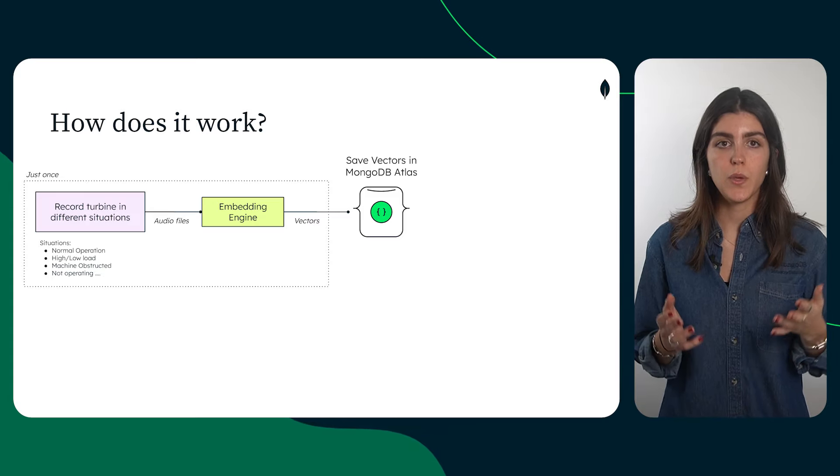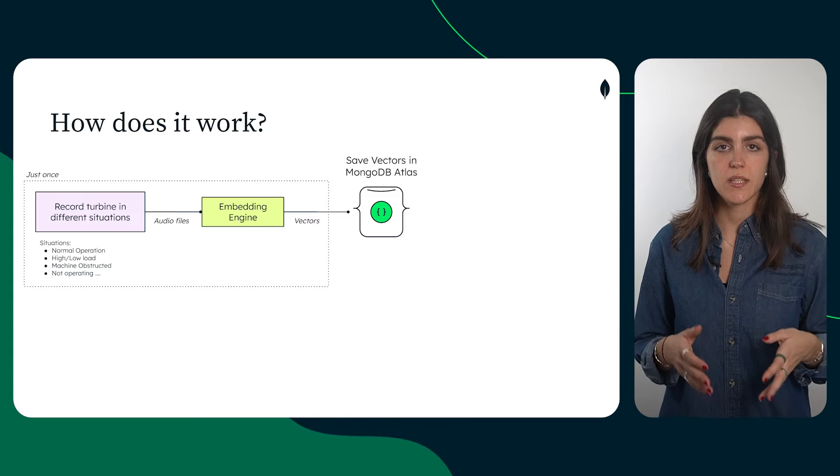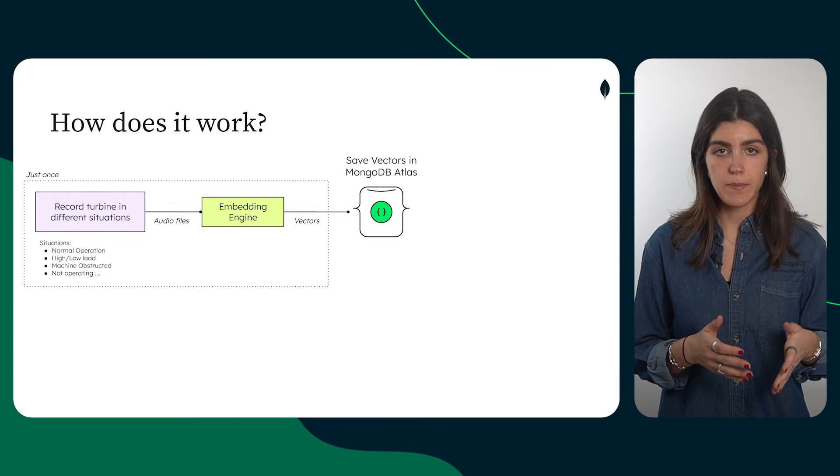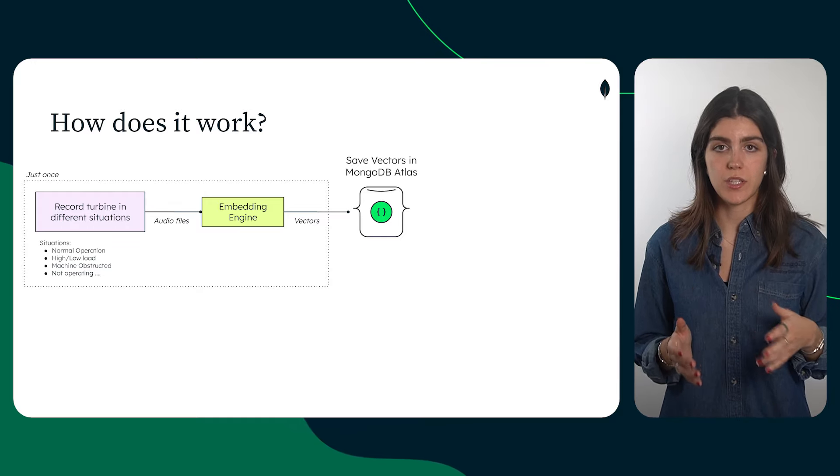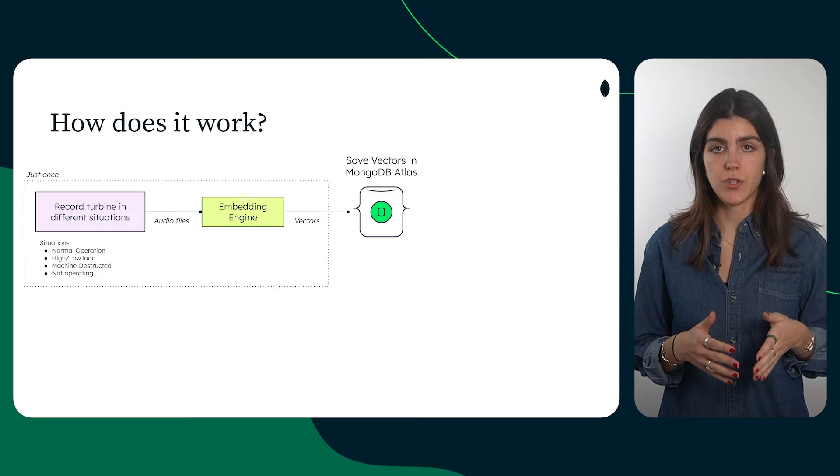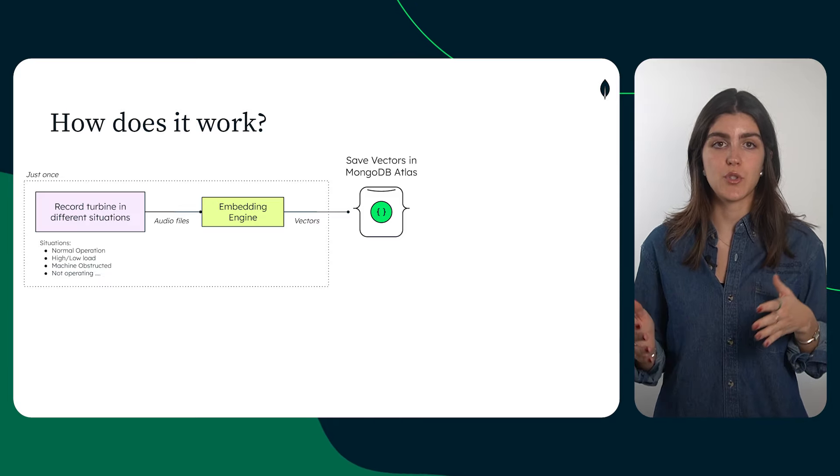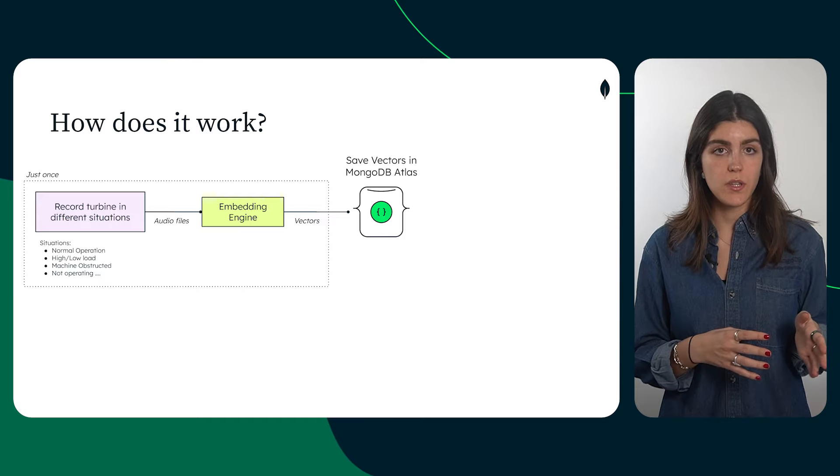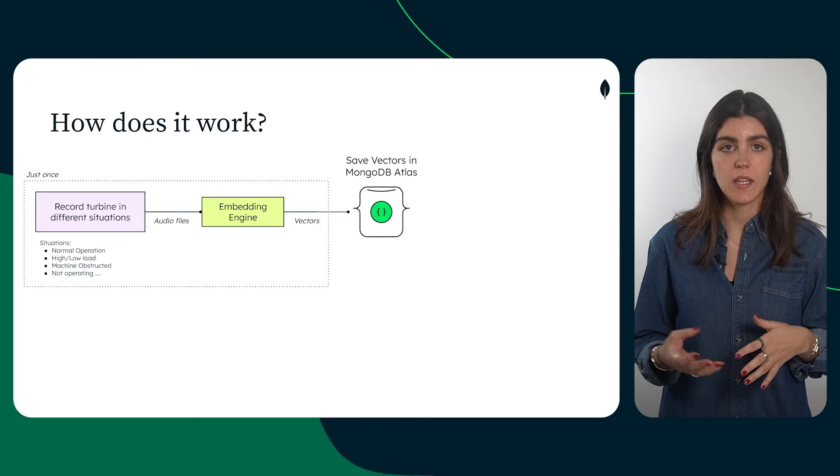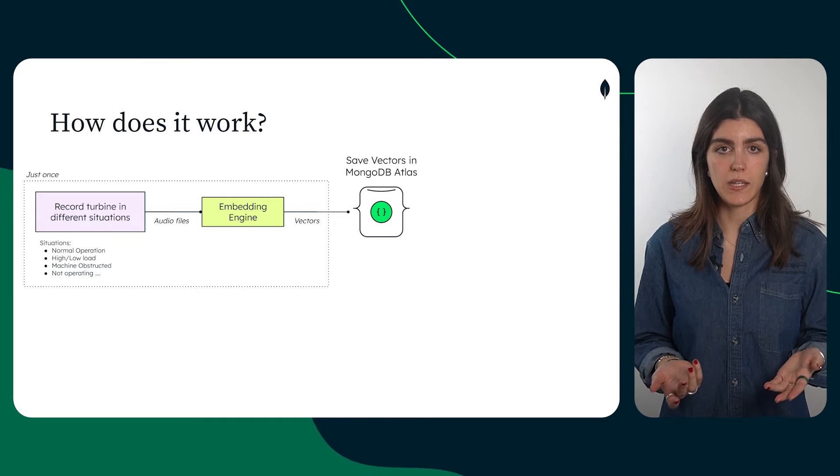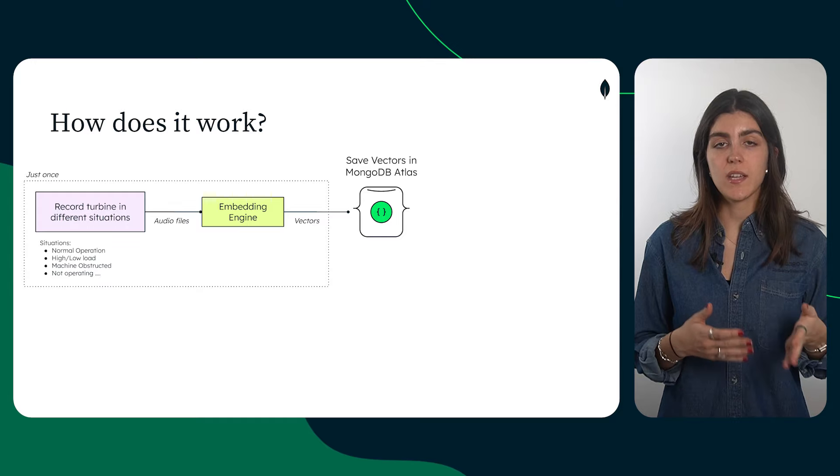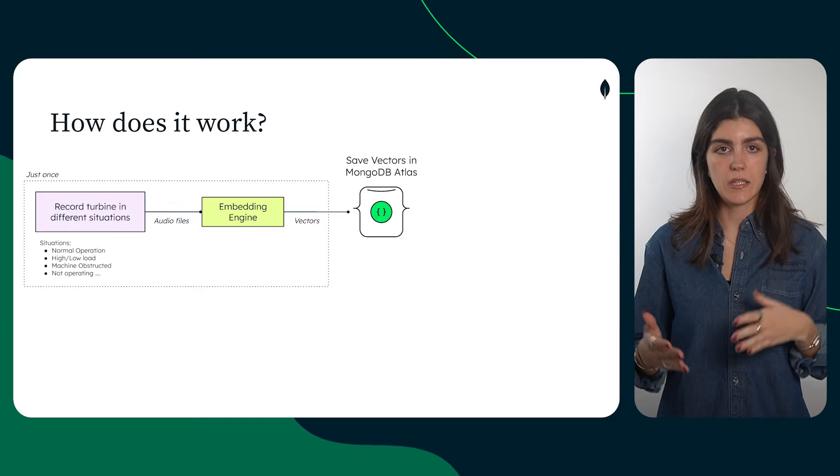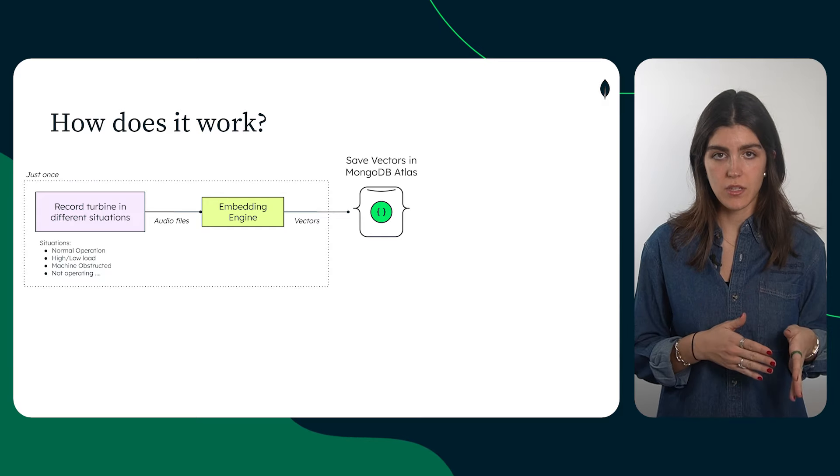Once the sound is collected, we use an embedding model to process the audio dictionary. This step allows us to generate embeddings for each audio track of the dictionary, which are high-dimensional vector representations capturing the unique characteristics of the sound. We then insert these vectors into MongoDB Atlas to be used for comparison later. We also need to create a vector index that enables MongoDB Atlas Vector Search to compare and identify audio patterns that match the sounds of interest.